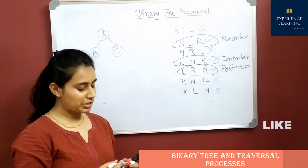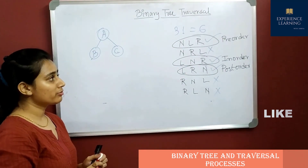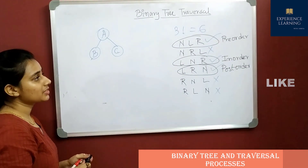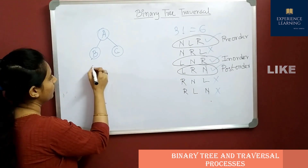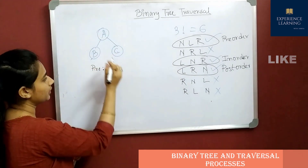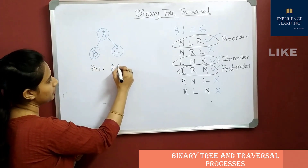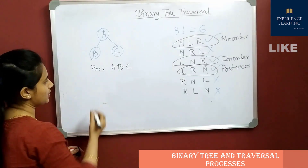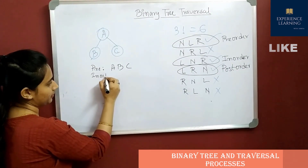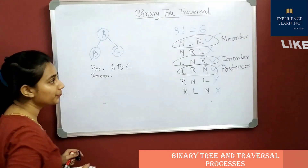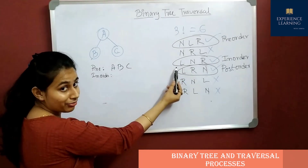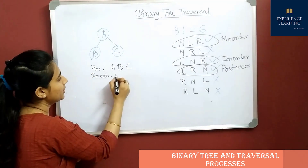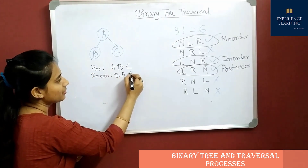Let's use the simplest binary tree with root A, left child B, and right child C. For pre-order traversal (node, left, right): A, B, C. For in-order traversal (left, node, right): B, A, C.